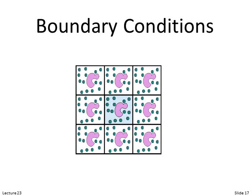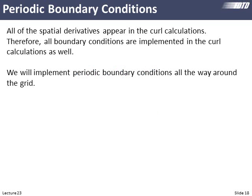On to our boundary conditions. There's nothing new here, but let's remember all the spatial derivatives in X, Y, and Z are in the curl terms. This is the only place where finite difference equations reach out to adjacent cells. So this is the only place where we can run into the problem of a finite difference equation needing a value from outside the grid. We've modularized our code so all boundary condition problems are isolated to our curl calculations.